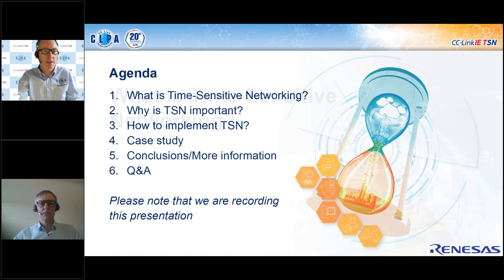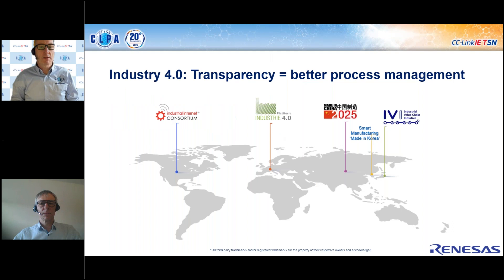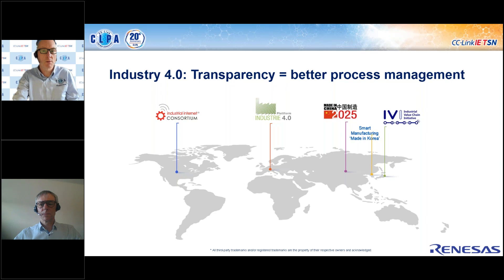Let's start by exploring what is Time Sensitive Networking. Most of us are familiar with Industry 4.0 — it's well established now for almost 10 years. In our context, it comes down to transparency: being able to see what is going on in your process and understand it better so that you can run it more effectively. This is a global activity, and while it may have different names in different places, the general idea is pretty much the same.